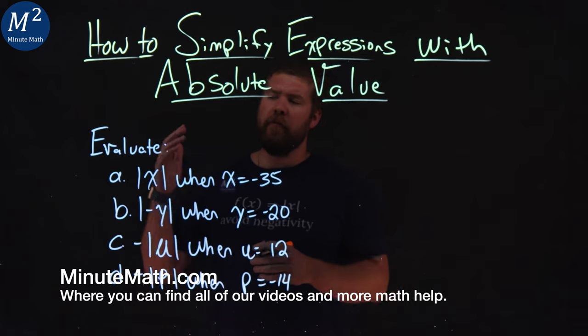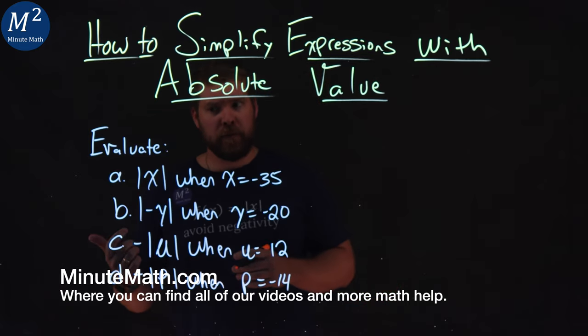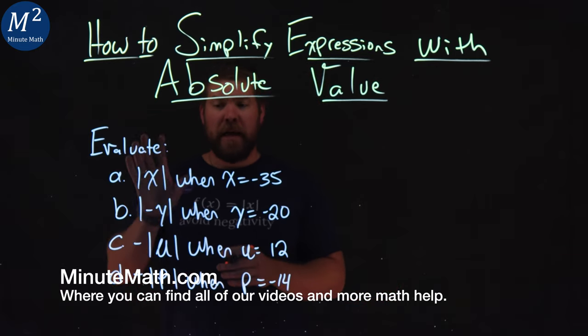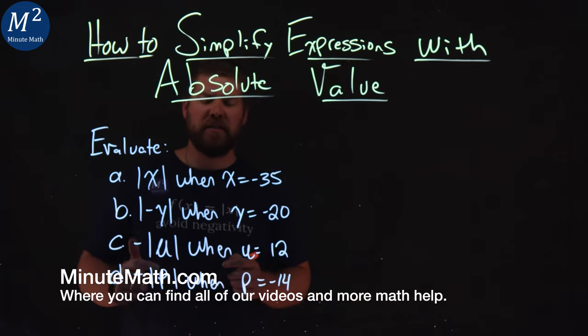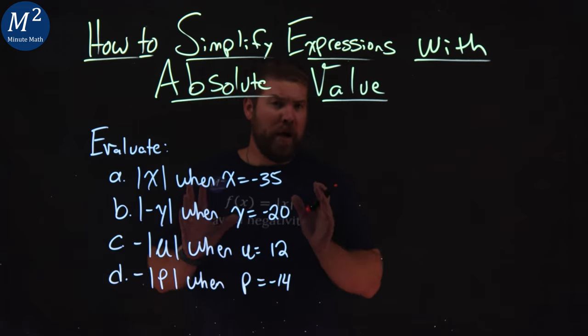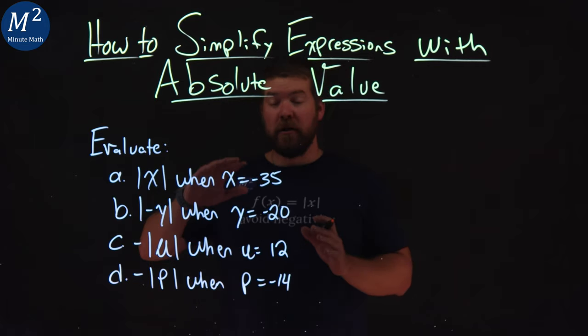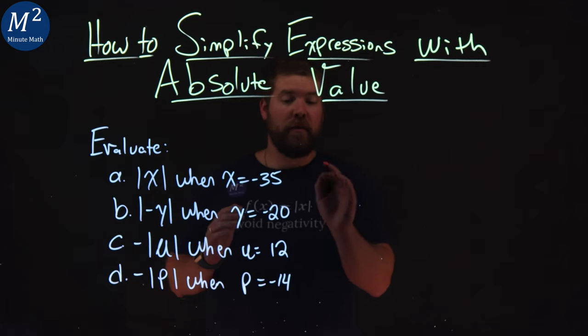We're given this problem here, we want to evaluate four parts. The first part we're given the absolute value of x when x equals negative 35, and there's different scenarios for each one. We got to make sure we keep our negatives in place and understand absolute value to simplify these.